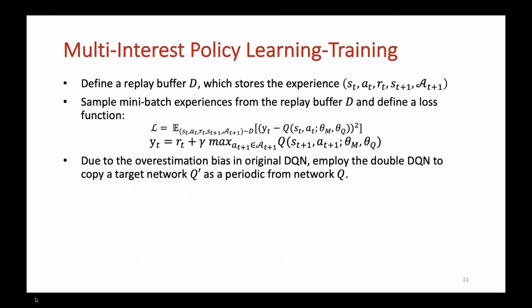For each turn, the agent will receive the reward based on the user's feedback. According to user feedback, we can update the state and action space. We define a replay buffer which stores the experience. To train our model, we sample mini-batch experiences from the replay buffer and define a loss function. Due to the overestimation bias in original DQN, we employ the double DQN to copy a target network periodically from the original network to train the model.